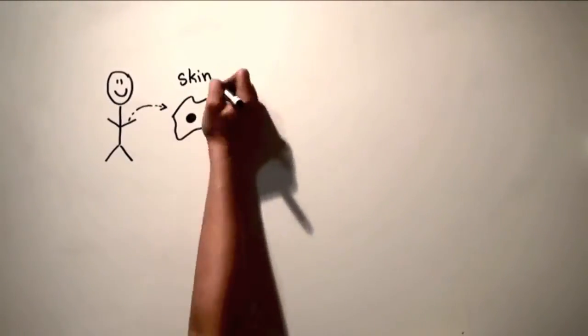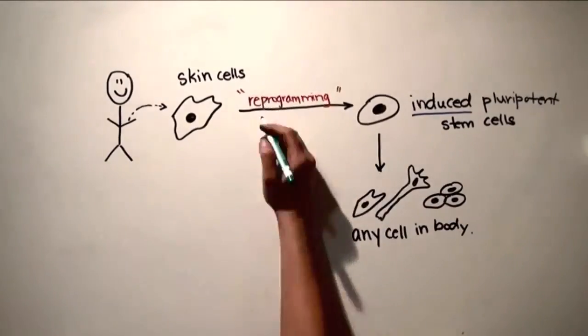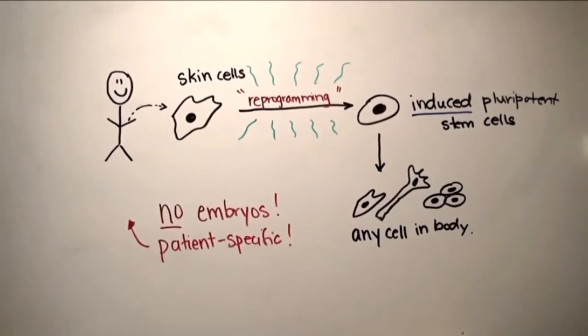In 2006 it was discovered that we can take our body cells and turn them back into embryonic stem cells in a process called reprogramming. The resulting cell is called an induced pluripotent stem cell.